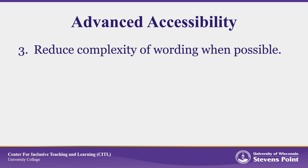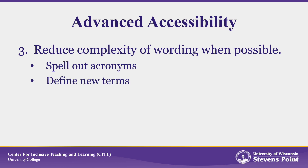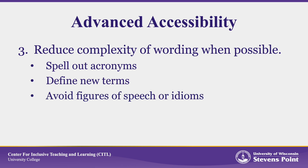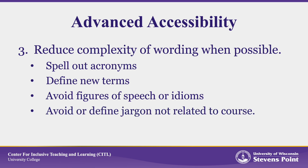Reducing the complexity of wording can be important for hearing impaired students, neurodivergent students, and students from less privileged educational backgrounds. Remember to spell out acronyms, define new terms, avoid figures of speech and idioms, and if you use them, explain them, because not all of your students have the same background to understand them. Finally, try to avoid jargon that is not directly related to the course.